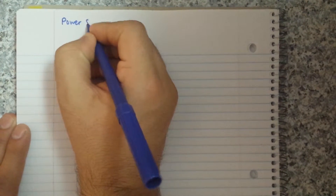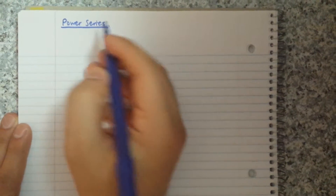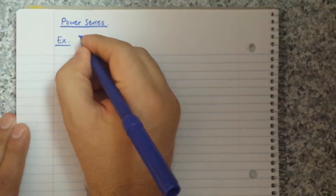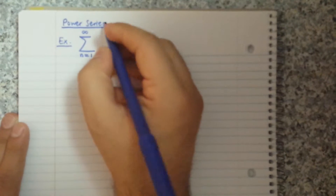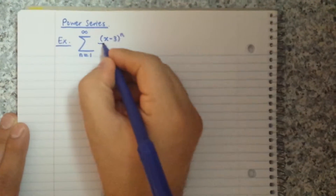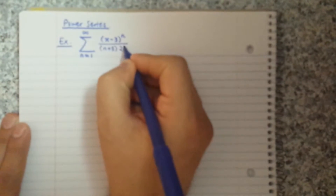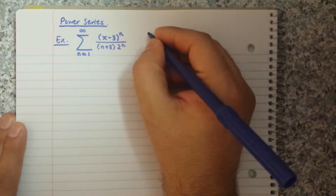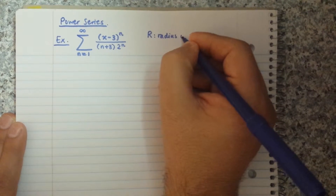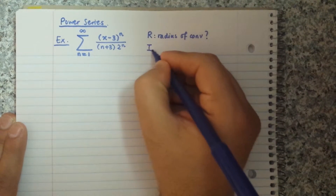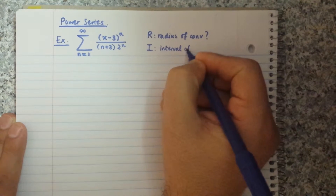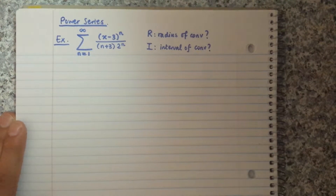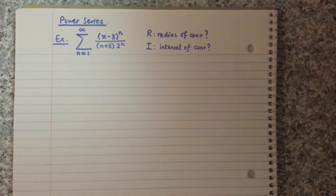Hello folks, today I'm going to solve an example from power series. It's a common example: the sum from n=1 to infinity of (x minus 3) to the power n divided by (n plus 3) times 2 to the power n. The problem is to find the radius of convergence R and the interval of convergence of this series.